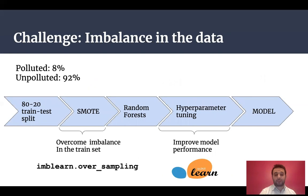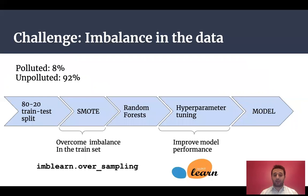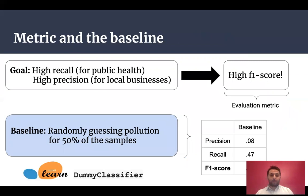The challenge for this project was that the data was imbalanced — basically, 8% of observations are polluted and 92% are unpolluted. To overcome the imbalance, after an 80/20 train-test split, I applied a technique that generates new examples of the minority class to balance the two classes in the training set. Then I applied a random forest algorithm to my training set, and using hyperparameter tuning, I improved the model performance.